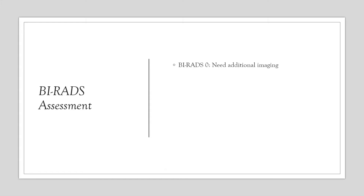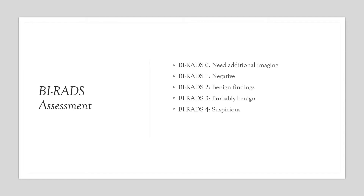Once we have described the breast mass, we come up with recommendations and an assessment. There are six BIRADS categories: 0 needs additional imaging; 1 is negative; 2 is benign findings; 3 is probably benign, followed with interval follow-up recommendations; 4 is suspicious; 5 is highly suggestive of malignancy — these two usually carry a biopsy recommendation; and 6 is pathologically proven malignancy.